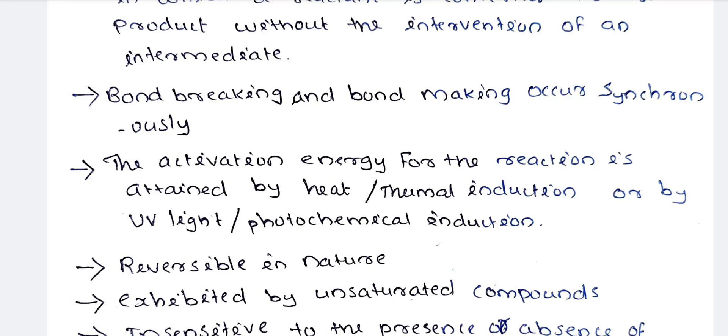To summarize, all pericyclic reactions are reversible, and they are exhibited by unsaturated compounds containing double bonds. That concludes the introduction to pericyclic reactions — see you in the next video.